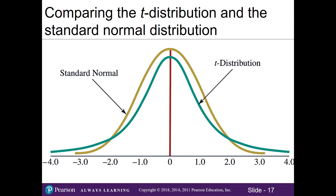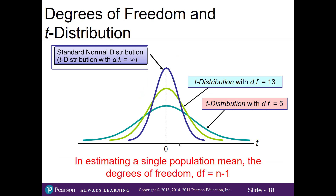So how does the t-distribution and standard normal distribution compare? The t-distribution is wider or more spread than the standard normal distribution because there's more variation when we are working with samples. Both the standard normal distribution and the t-distribution are bell-shaped and symmetrical. There is only one standard normal distribution, which we learned in Chapters 6 and 7 and are using again here in Chapter 8. There are many different t-distributions, and it depends on our degrees of freedom, which are based on our sample size.